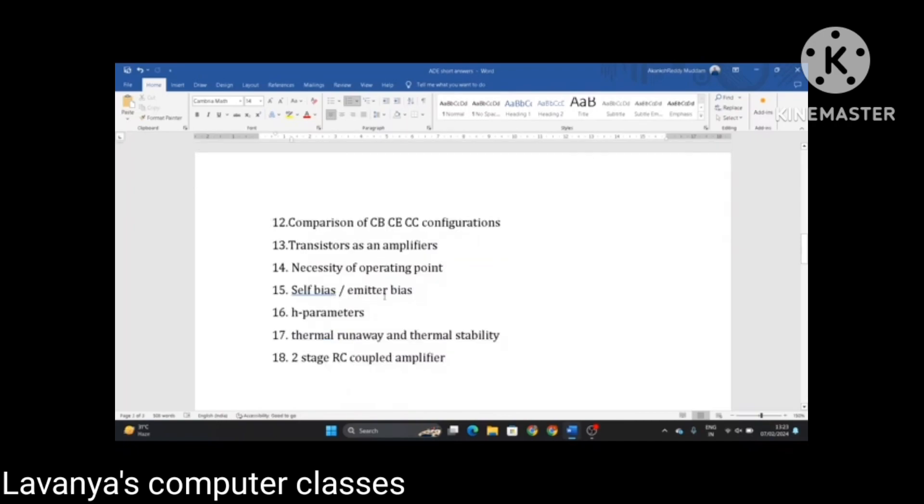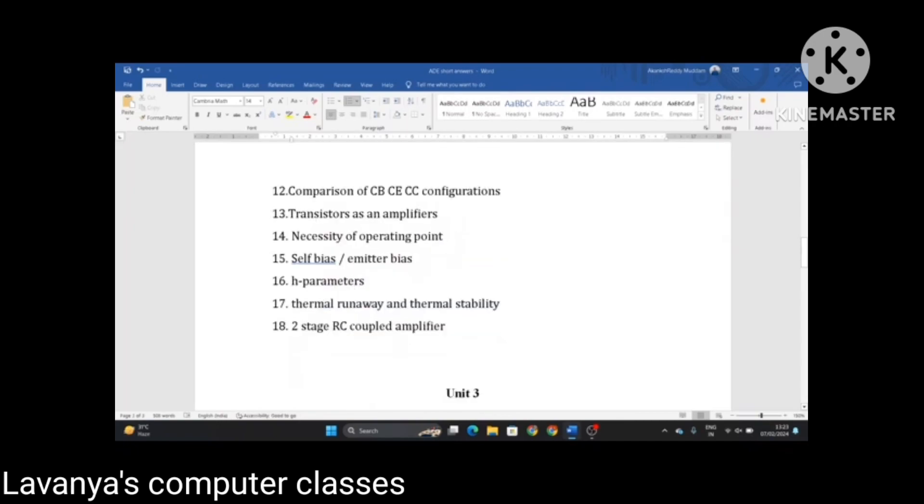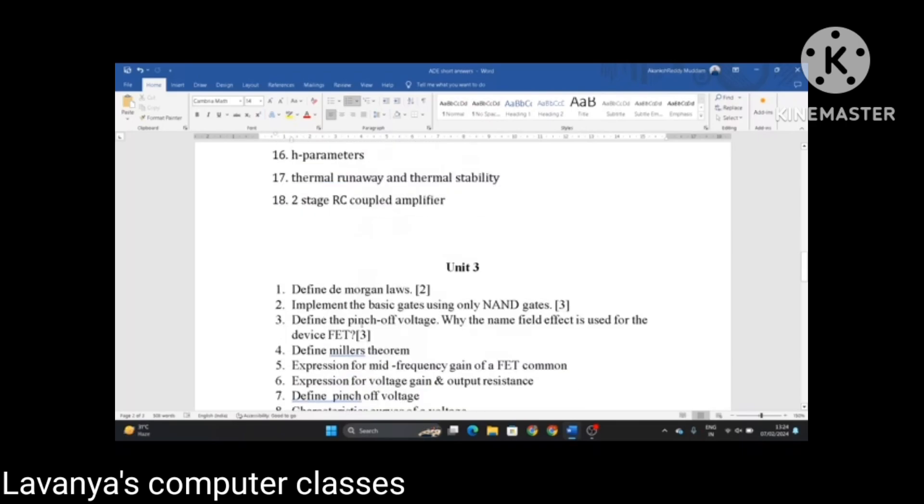Explain self-bias, emitter bias, H parameters, thermal runaway and thermal stability, comparisons defined and two stage RC coupled amplifiers. These are the important questions in unit 2.